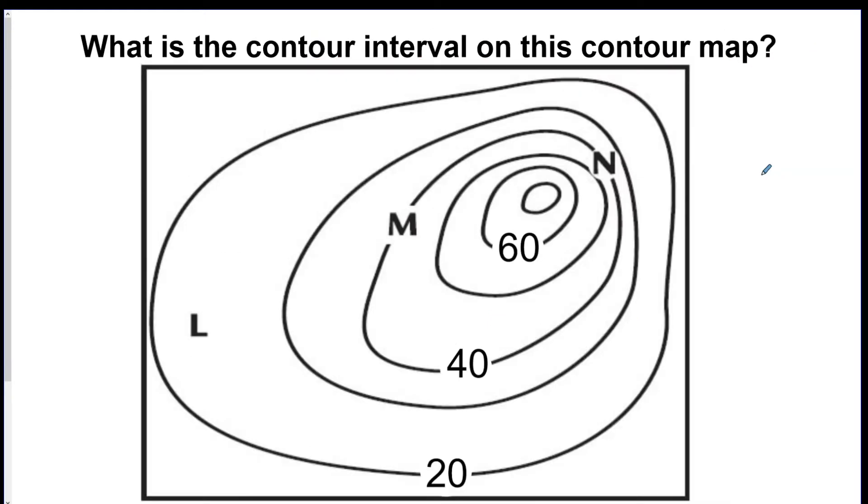All right, you try. What's the contour interval of this map? What do the lines go up by? All right, well, hopefully you said 10. So here's 20. This one would be 30. This one would be 40, 50, 60, and 70. So they go up by 10s.